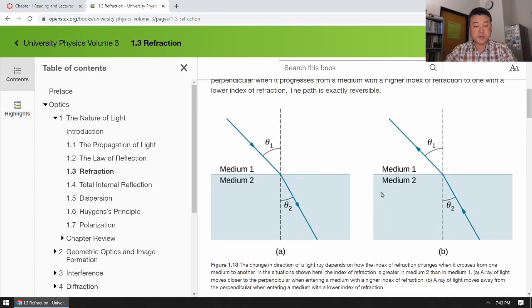So this figure illustrates that medium 2 is the medium with a greater index of refraction or medium 2 is the medium where light travels slower. Then it shows when the light is going from medium 1 to medium 2, the light ray bends so that it's closer to the surface normal.